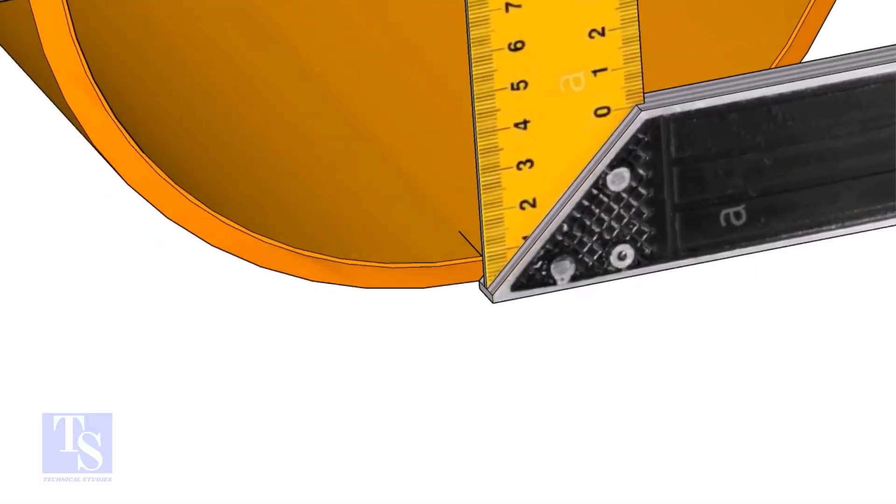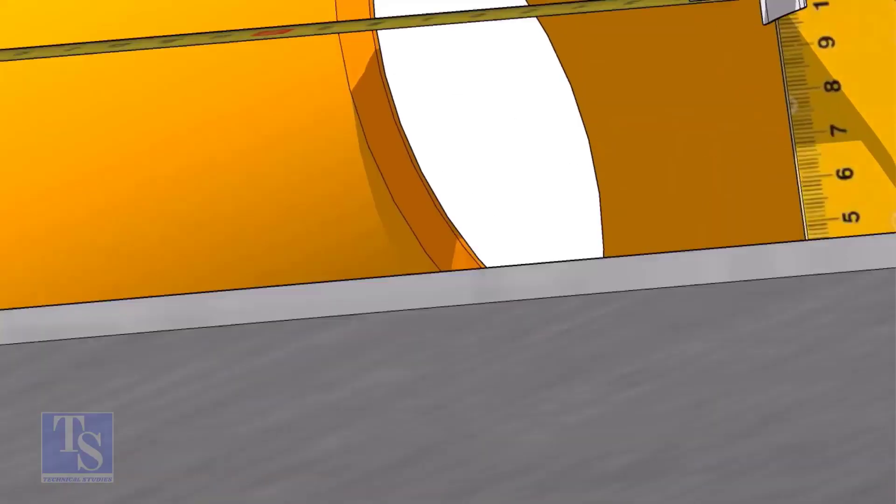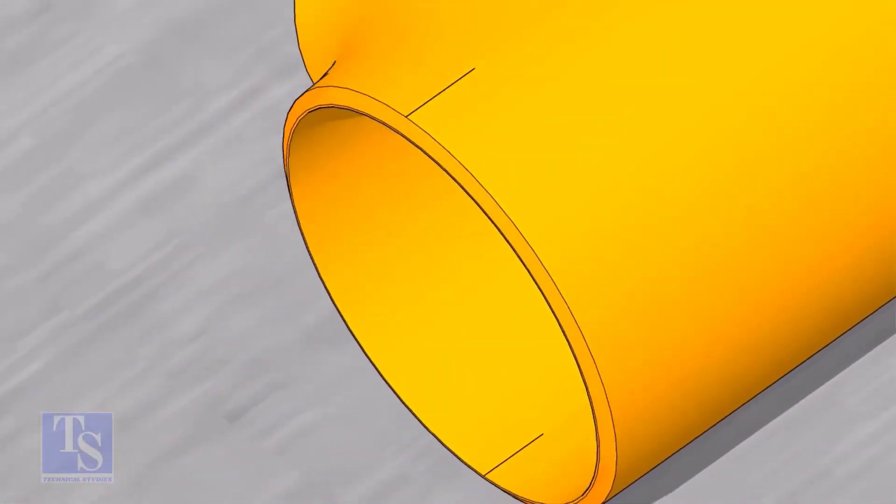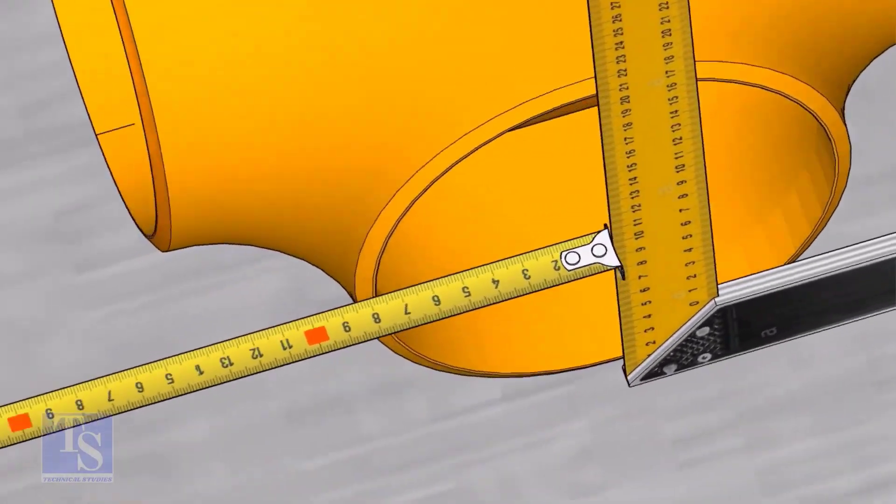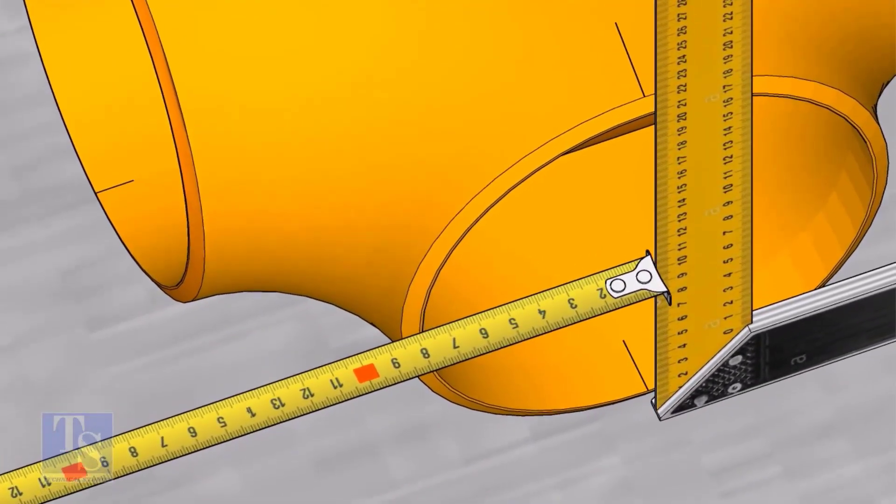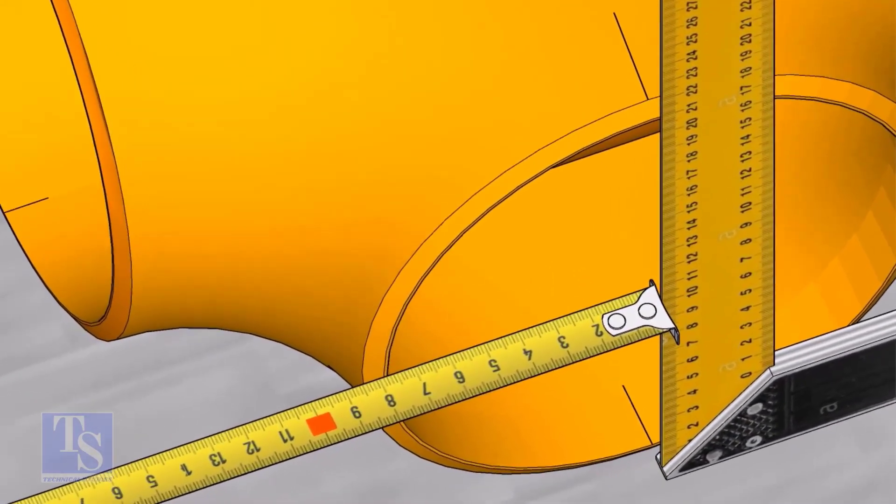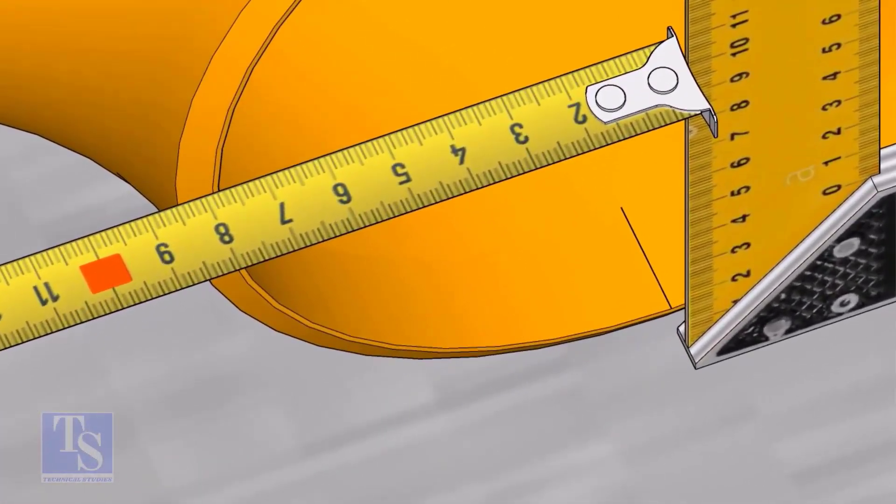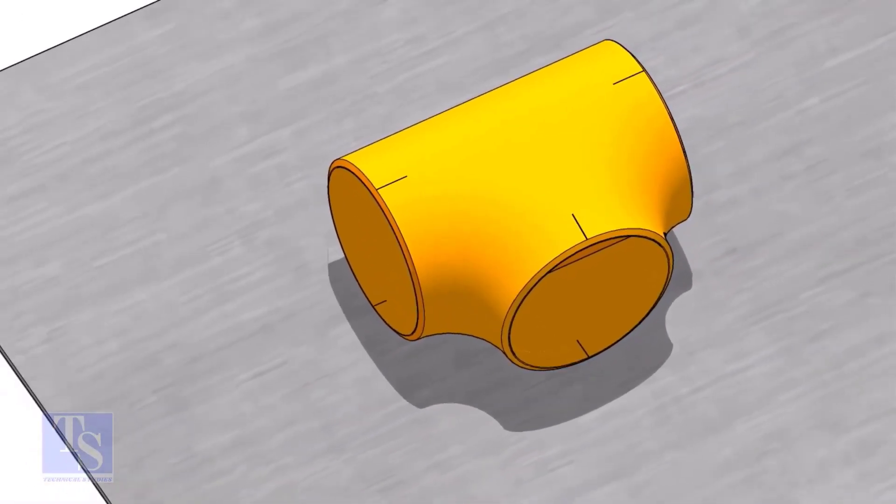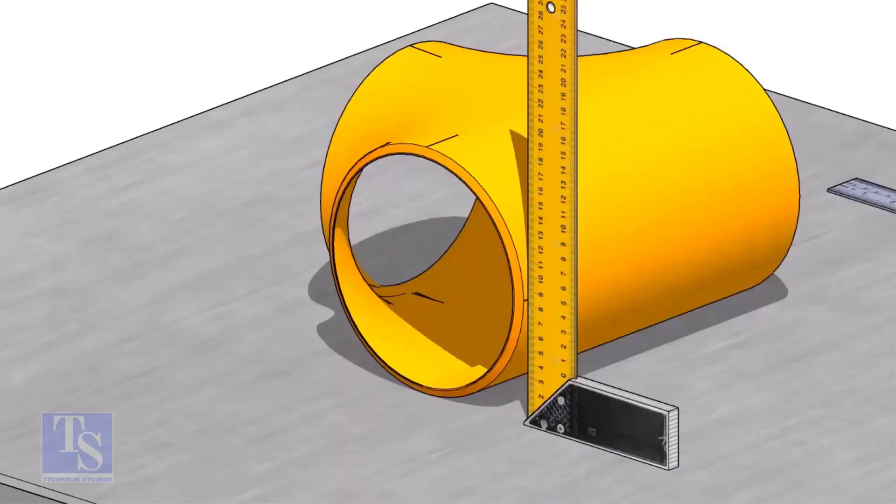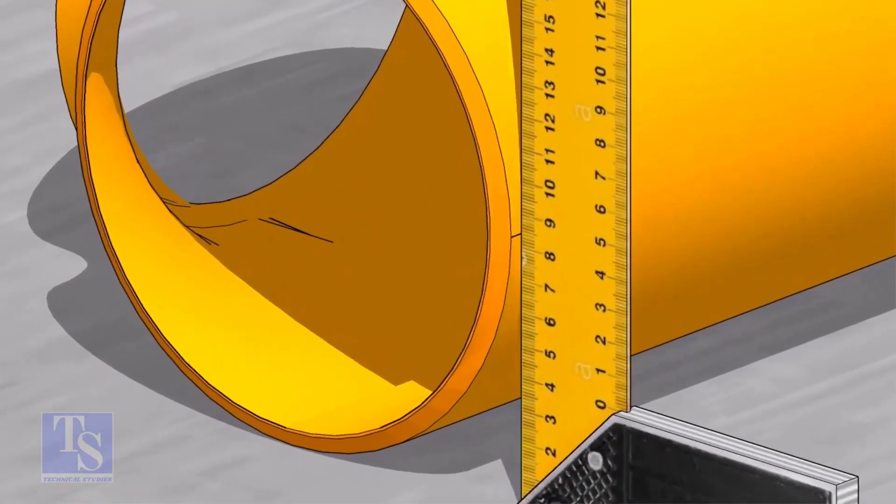Now, mark 84 millimeters from the plate to the sides of the tee, as shown.